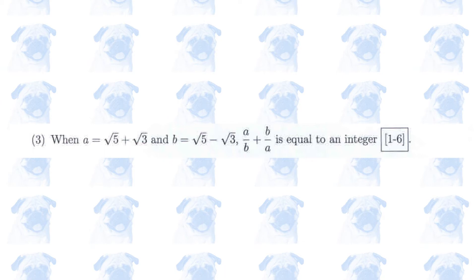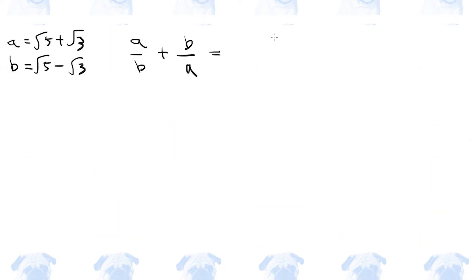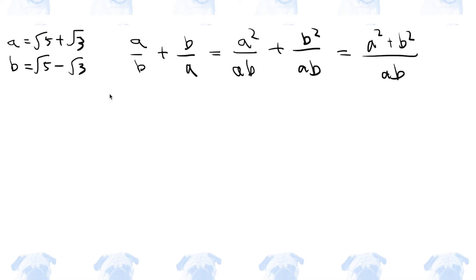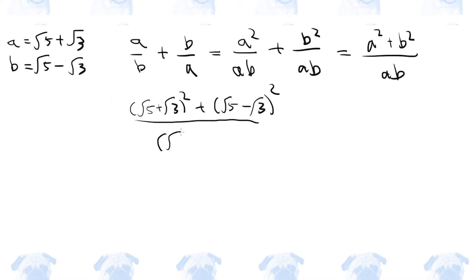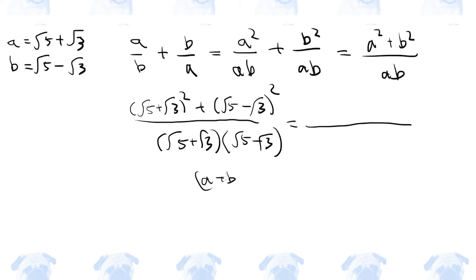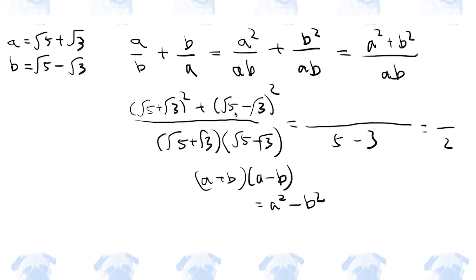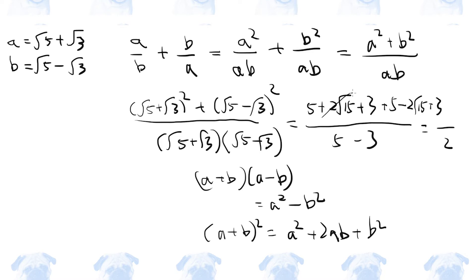Number 3. In order to add these two fractions together, we need to do a little trick. And let's substitute these values. Let's calculate the denominator first. a plus b times a minus b is a squared minus b squared, which is 5 minus 3, which is 2. And as for the two terms on the numerator, these two terms will cancel each other. So 10 plus 6 is 16. So the final answer is 8.